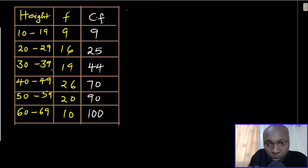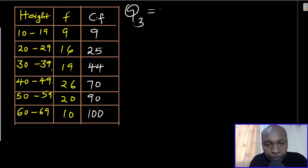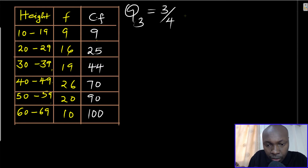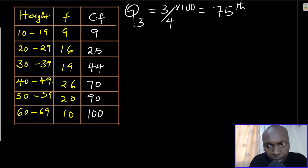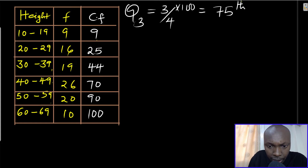Now we start by getting the upper quartile Q3. The position of Q3 is three-quarters of the total frequency: (3/4) × 100 = 75. So Q3 is in the 75th position. We need to identify the class that contains the 75th position.